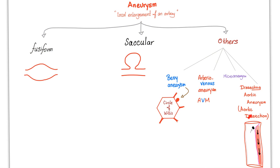Before we talk about aortic dissection, let's talk about an aneurysm. An aneurysm is a local enlargement of an artery. It could be fusiform, saccular, and others — including berry aneurysm, also known as brain aneurysm, arteriovenous malformation, as well as dissecting aortic aneurysm. That was the old name. The new name is aortic dissection: there is a tear in the wall of the vessel, and then the blood accumulates inside the wall.